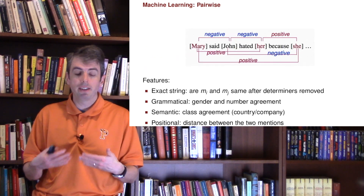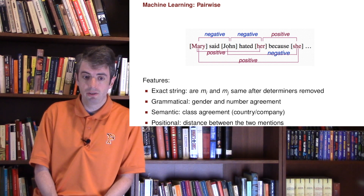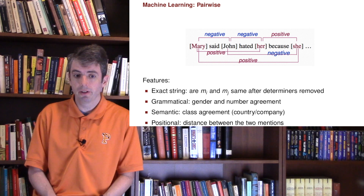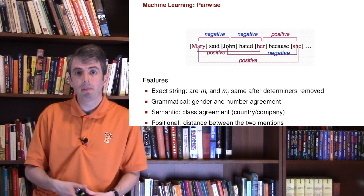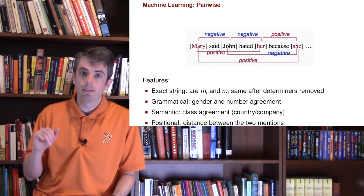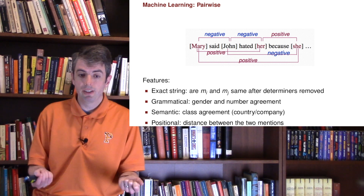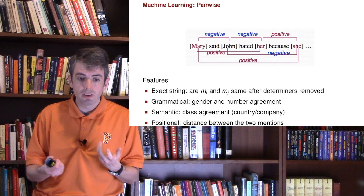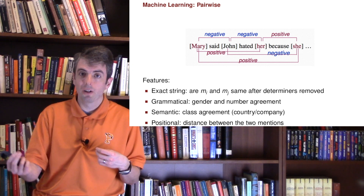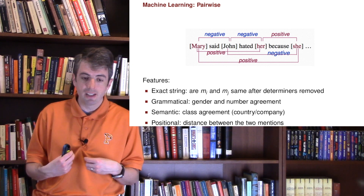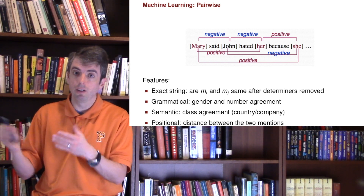Now let's talk about machine learning for coreference. The first approach is pairwise coreference: for every pronoun and every entity, you have a binary classification — is this referring to this entity or not? Features include whether the mentions are similar, grammatical constraints, semantic constraints like whether the reference is to an organization or the right nationality, and positional constraints, since pronoun references typically don't span very long distances.